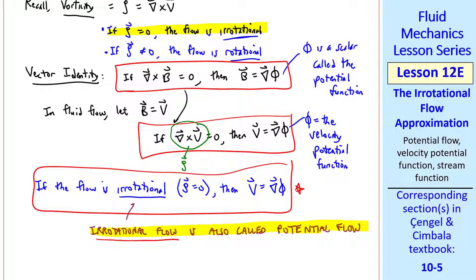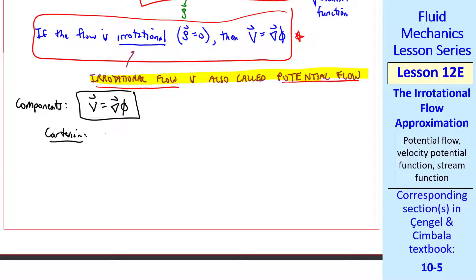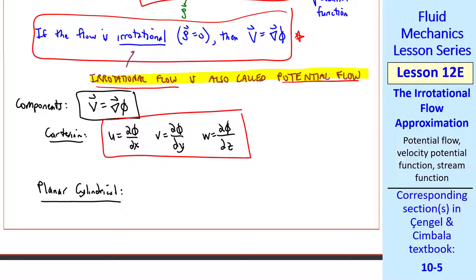Let's look at the components of v equals gradient of phi. In Cartesian coordinates: u equals del phi del x, v equals del phi del y, and w equals del phi del z. In planar cylindrical coordinates: u_r equals del phi del r, u_theta equals 1 over r times del phi del theta, and u_z equals del phi del z.